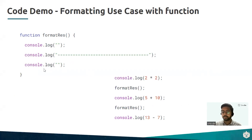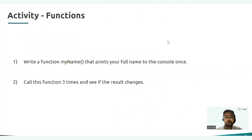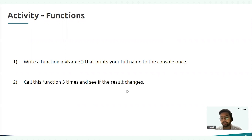So whenever we have reusable code, functions are the best use case. If this formatting needed to change one thousand times, you'd only update it in one place and it replicates across all thousand calls. This is how declaration and calling of a function works. Now you have an activity: write a function myName that prints your name to the console, then call this function three times and see if the result changes. Pause the video now.